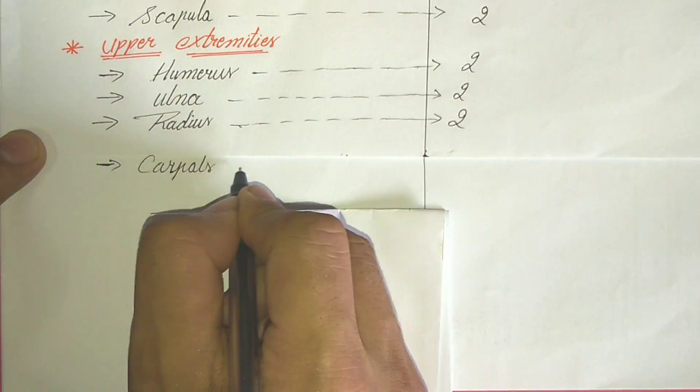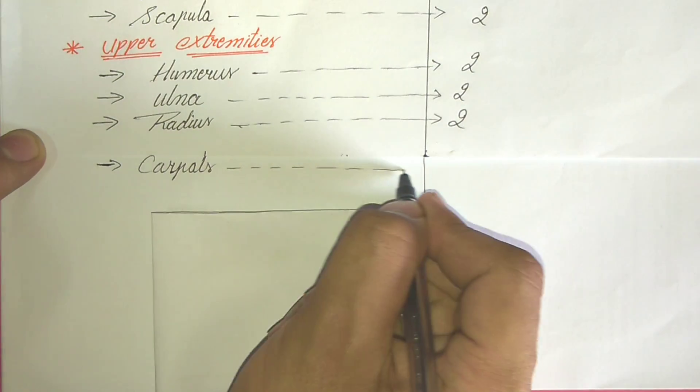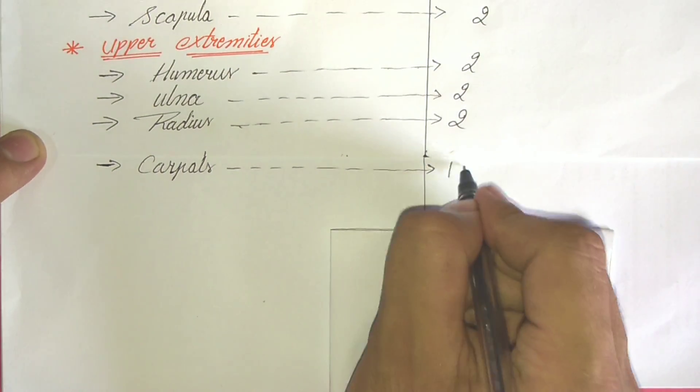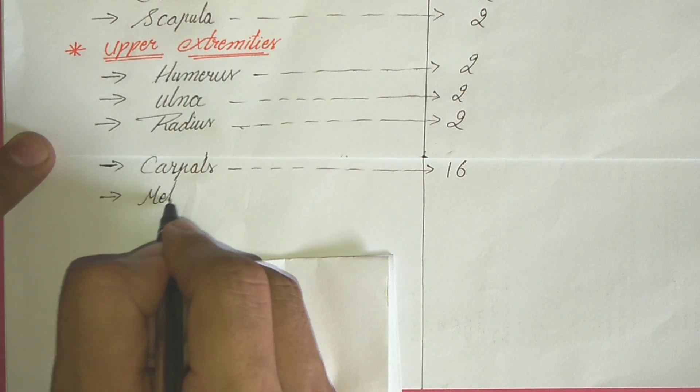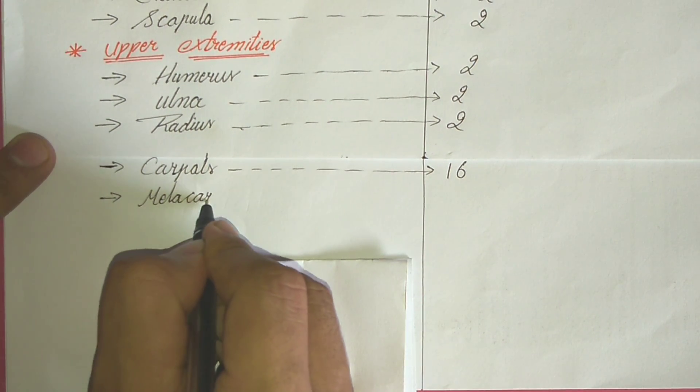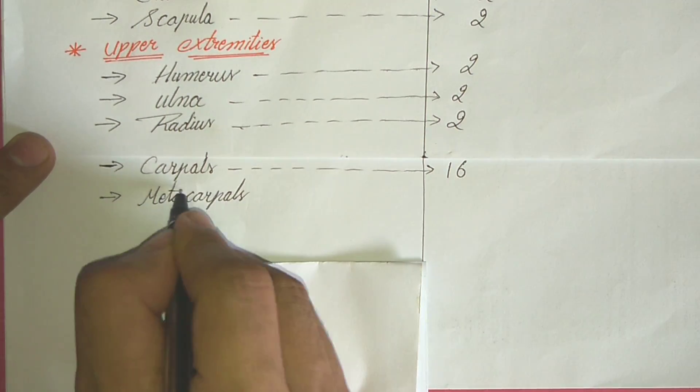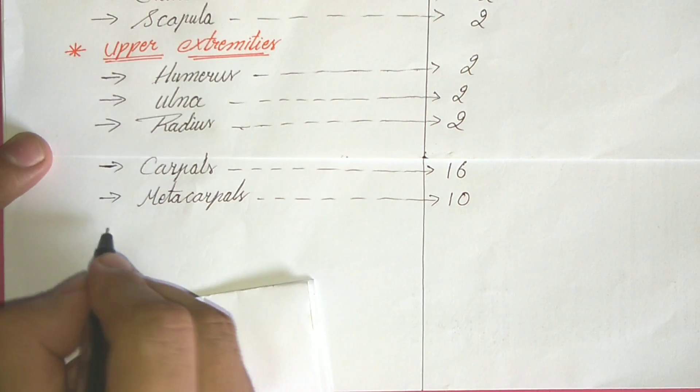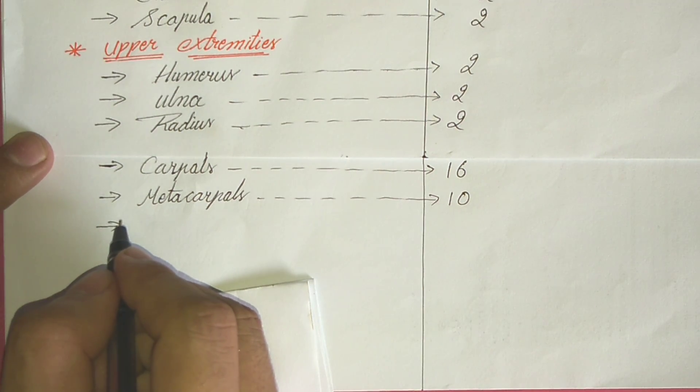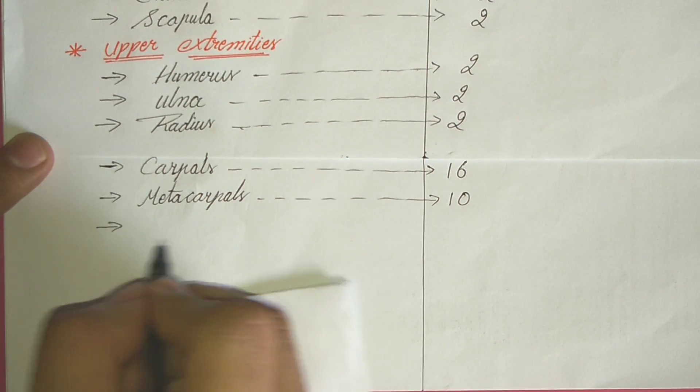Here the carpal bone, which is 16 in number, eight on each side. And metacarpal bones. Tell me how many metacarpal bones are there? 10. Very good. Five on each side.